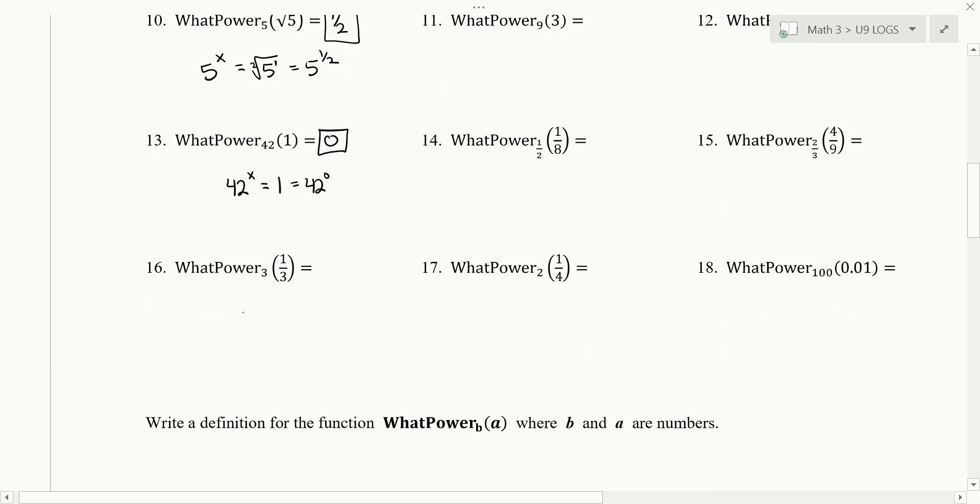Number 16 is asking the question 3 to what power is 1 third. If you're working with a fraction, like if you have 1 over a number, this is 3 to the power of 1. We can move it to the top part of the fraction by making it 3 to the power of negative 1. And so x is negative 1.